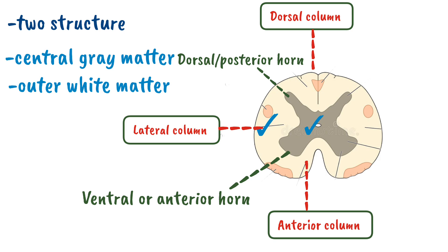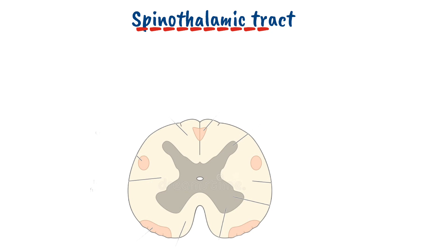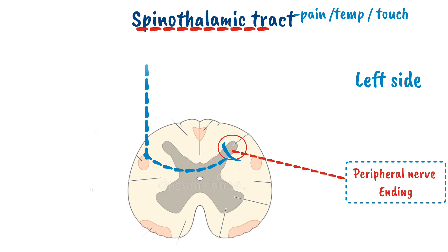Now let's study each individual tract in detail. The first one is the spinothalamic tract. As the name indicates — spine and thalamic — this tract carries electrical signals from the spine to the thalamus. Whenever we feel a sensation of pain, temperature and touch on the left side, these sensations are carried from the peripheral nerve endings to the dorsal horn of the spinal cord. In the dorsal horn, it will synapse with a second neuron, and this neuron will decussate, meaning it will move toward the opposite side and ascend to the thalamus.